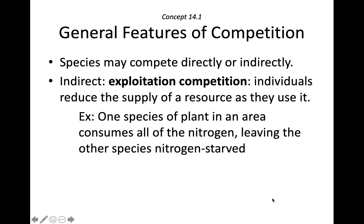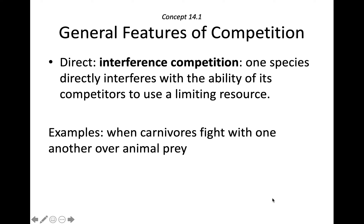Species can compete with each other either directly or indirectly. Indirect competition is exploitation competition, where individuals reduce the supply of a resource as they use it — it's not a direct interaction. One example would be one species of plant consuming all the nitrogen, leaving all other species nitrogen-starved. That's exploitation competition.